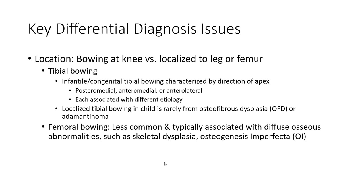Tibial bowing: infantile or congenital tibial bowing is characterized by the direction of the apex. Directions include posteromedial, anteromedial, or anterolateral, and it is associated with different etiologies.